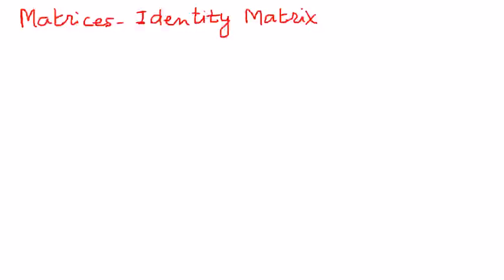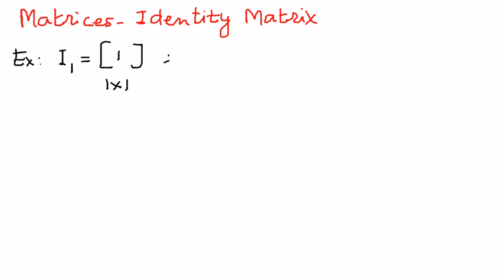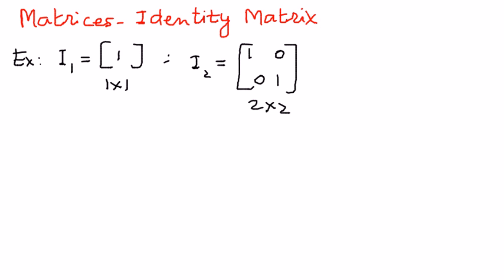Let me define and state that with an example. If I is an identity matrix, I will call that I1, and it has just 1 row and 1 column — the size of this identity matrix is 1 by 1. Let's say we have another identity matrix, I2. I1 means 1 row and 1 column; I2 means 2 rows and 2 columns: [1, 0; 0, 1]. It is a 2 by 2 square matrix, with 1s along the diagonals and 0s elsewhere.